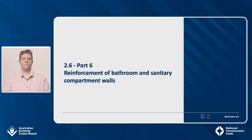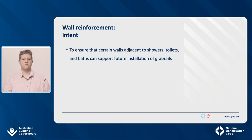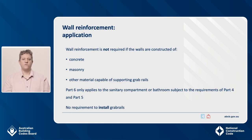The last part of the standard covers reinforcement of bathroom and sanitary compartment walls. The intent of these requirements is to ensure that certain walls adjacent to showers, toilets and baths can support the future installation of grab rails. Reinforcements to walls are covered by H8P1F in NCC Volume 2 and G7P1 in NCC Volume 1, H8D2 in NCC Volume 2 and G7D2 in NCC Volume 1, and Part 6 of the standard. Wall reinforcement is not required if the walls are constructed of concrete, masonry or other material capable of supporting grab rails, including plaster applied to masonry or concrete. Wall reinforcement only applies to sanitary compartments or bathrooms subject to requirements of Part 4 and Part 5. To be clear, there is no requirement to install grab rails — only the blocking or sheeting to support them.